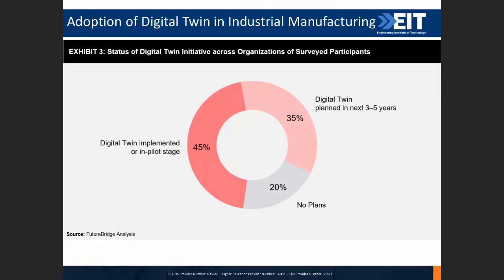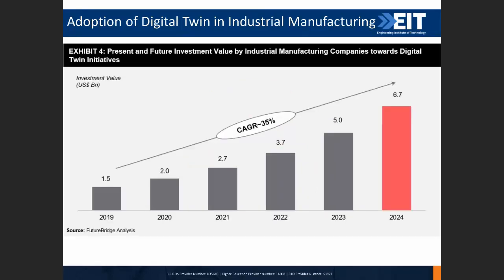In terms of implementation, 45% of survey respondents have digital twin implemented or in a pilot stage, 35% plan to implement it in the next three to five years, and only 20% have no plans. So 80% of big industry players are planning for digital twin — that's coming, you have to be prepared. In terms of investment value, around 2.7 billion dollars have been invested by companies, and that's expected to go much higher in the next two to three years.